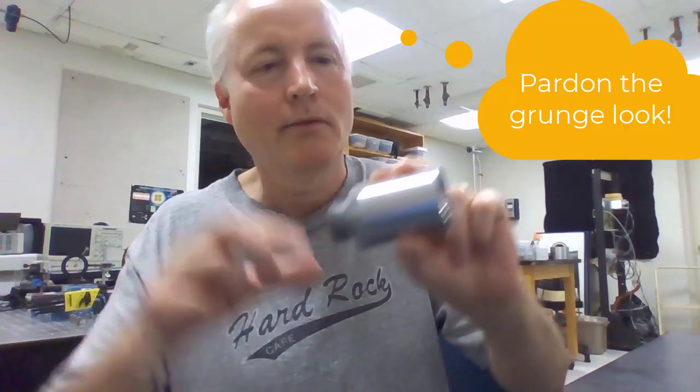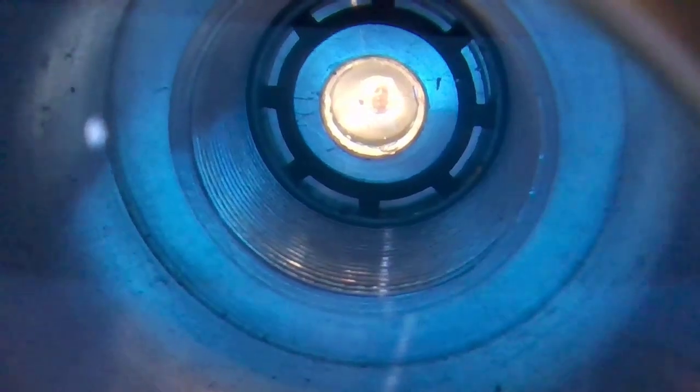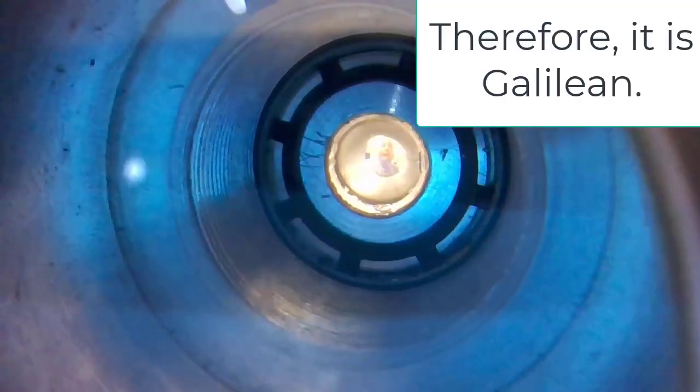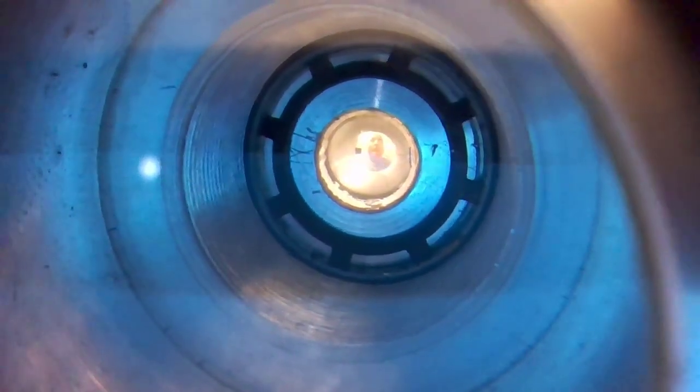I have two beam expanders. The short one is about six centimeters long. And if you look through it, you can tell if it's Keplerian or Galilean. It's upright. Therefore, it is Galilean. I can move my hand up, move my hand down. My hand goes up or down. You see it going up or down.